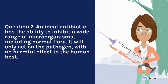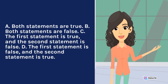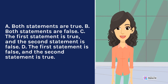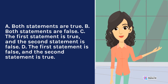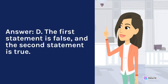Question 7. An ideal antibiotic has the ability to inhibit a wide range of microorganisms, including normal flora. It will only act on the pathogen, with no harmful effect to the human host. A. Both statements are true. B. Both statements are false. C. The first statement is true and the second statement is false. D. The first statement is false and the second statement is true. Answer: D. The first statement is false and the second statement is true.